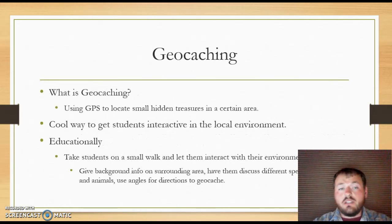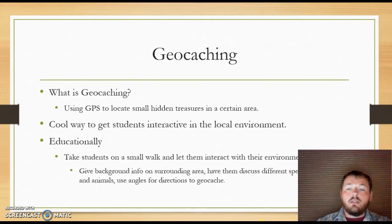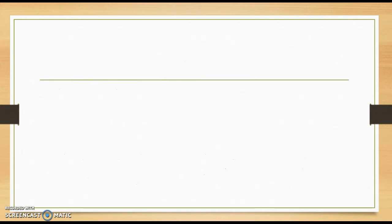Now we're getting into geocaching. What is geocaching? It's using a GPS to locate small hidden treasures in a certain area — a cool way to get students interactive in the local environment. As an educational tool, it takes students on a small walk and lets them interact with their environment, gives background info on the surrounding area, and has them discuss different species of plants and animals. It also uses angles and math for directions to the geocache — for example, making a 90-degree right turn or a 45-degree left turn. It's a great way to get students out of the classroom.